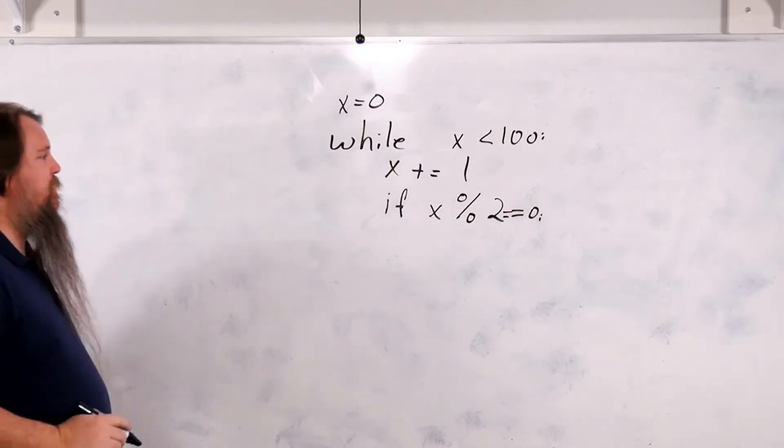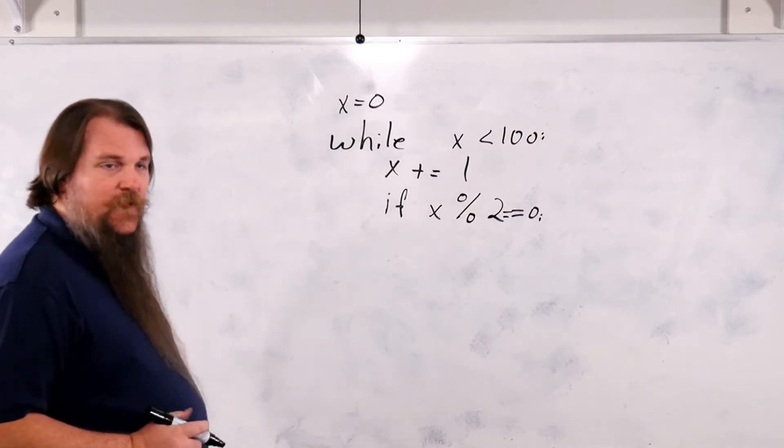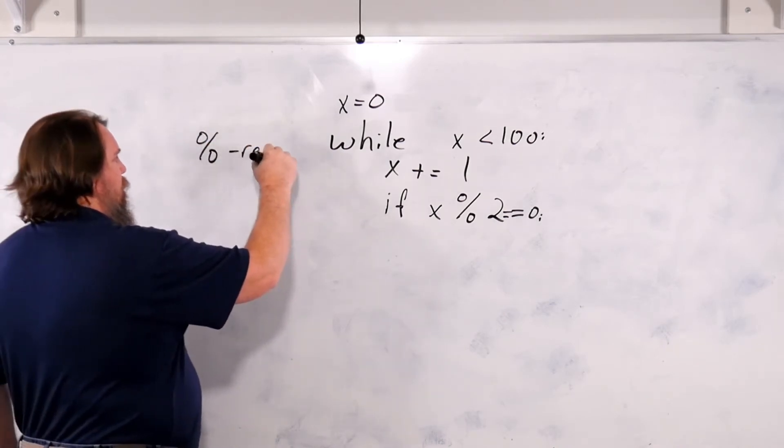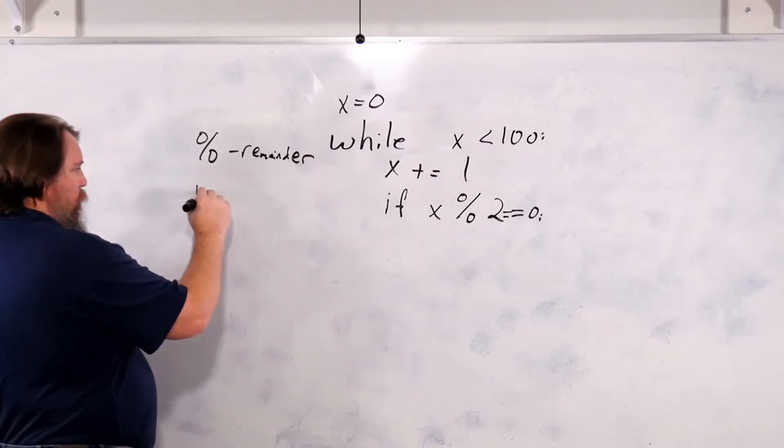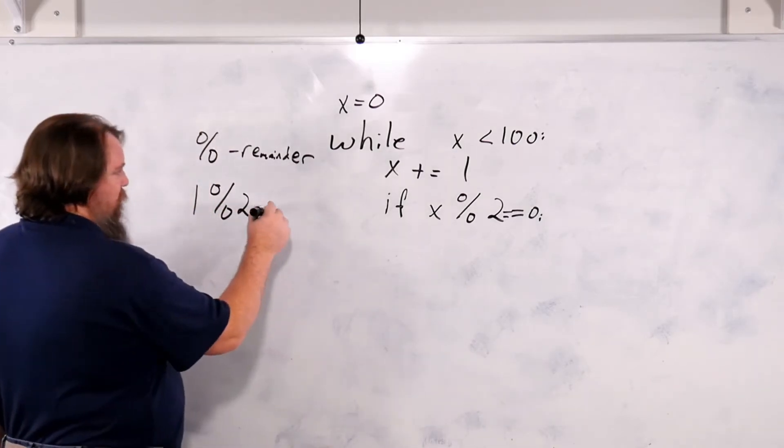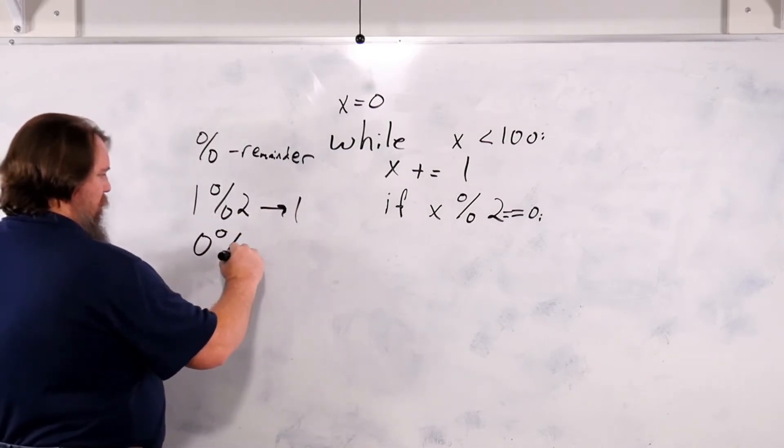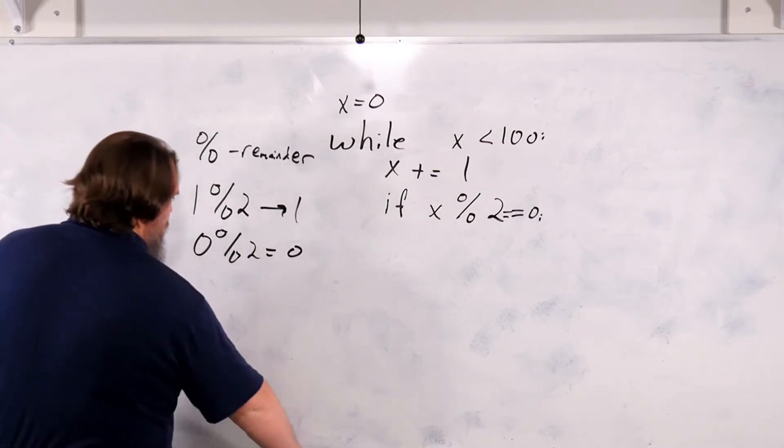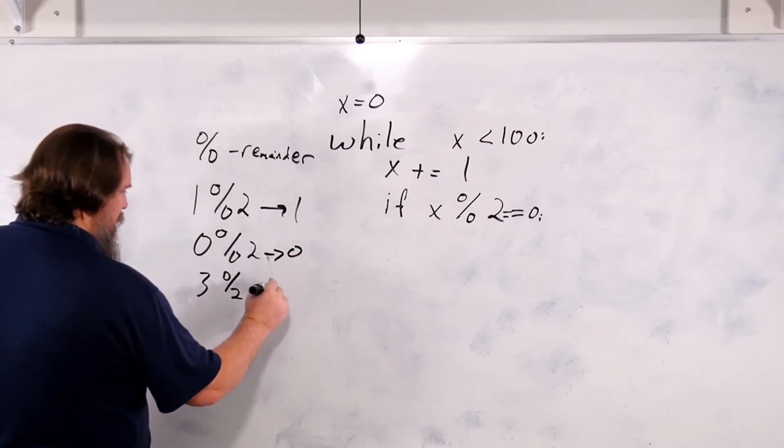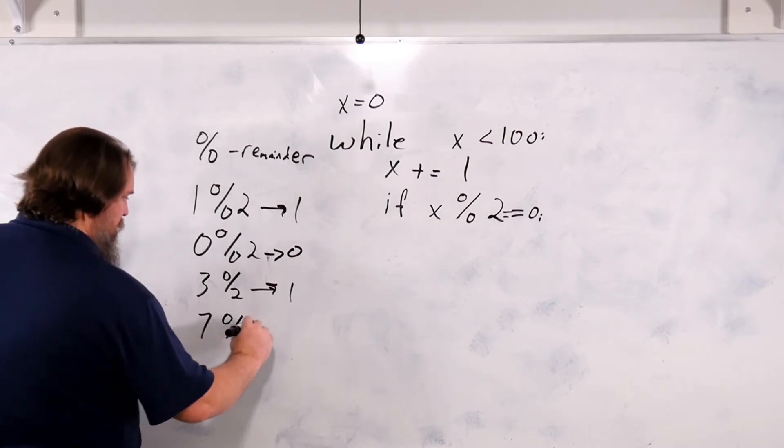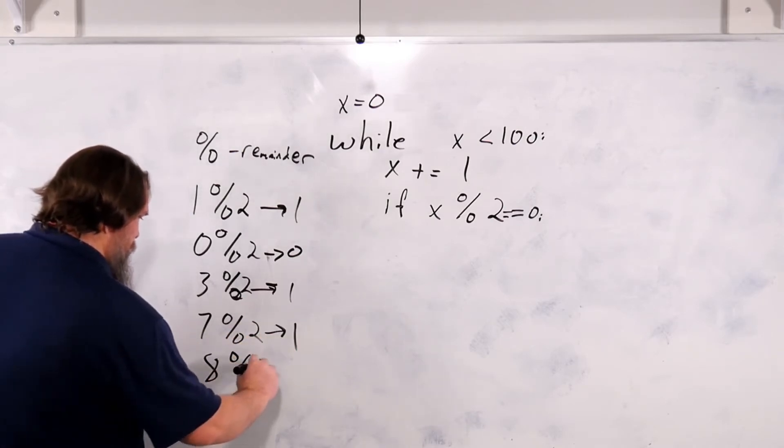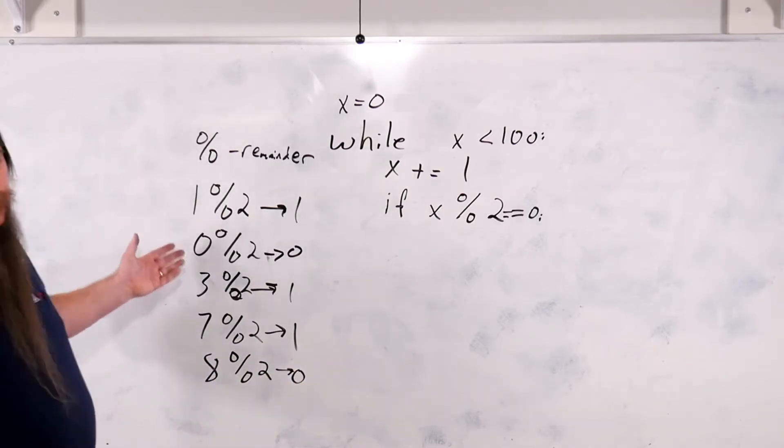So hopefully you've seen modulo, but if you haven't, modulo is the remainder operator. So modulo is remainder. 1 mod 2 gives you 1, 7 mod 2 gives you 1, 8 mod 2 gives you 0. So this is just saying the remainder after division.